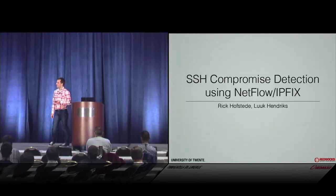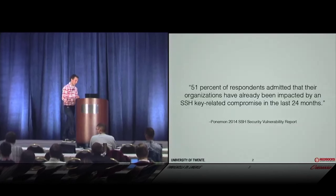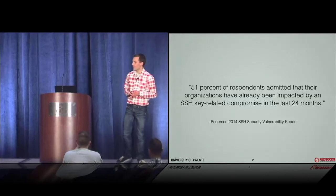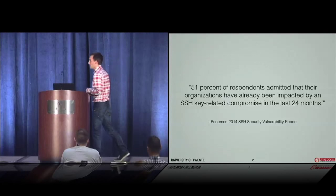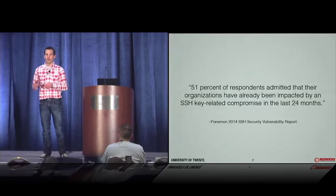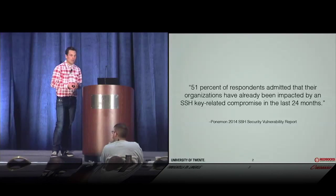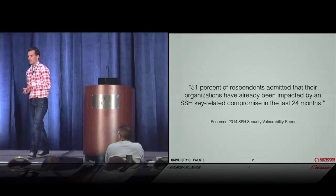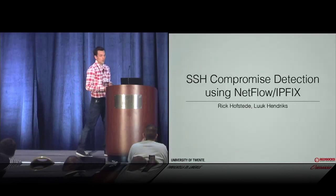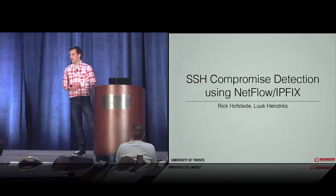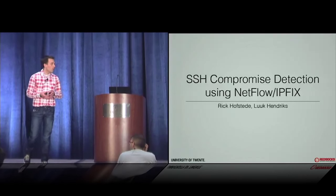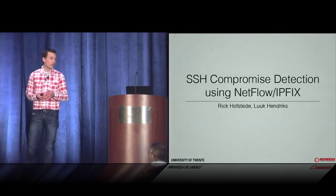Thanks for the introduction. I'd like to start by pointing out a recent Ponemon report released in 2014, which revealed that 51% of the global 2000 companies had been compromised during the past 24 months. That was mostly a key management-related issue. SSH attacks are a big issue in our networks, and that is basically the main focus of this presentation. My colleague Luke and I have been working on SSH compromise detection based on typical flow data.